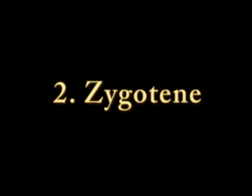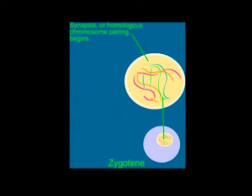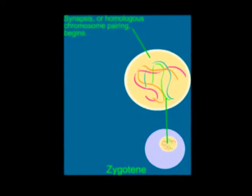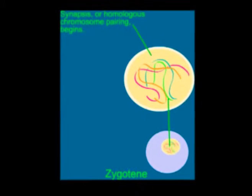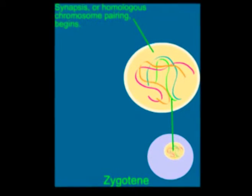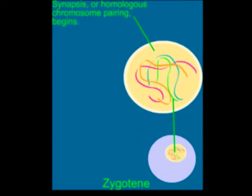Zygotene: The zygotene stage of prophase 1 begins as soon as synapsis, or intimate pairing between the two homologous chromosomes, is initiated. The initial recognition requires that the homologous chromosomes recognize each other from a distance.